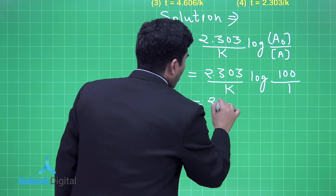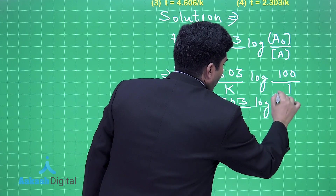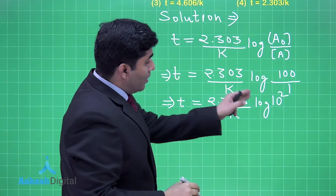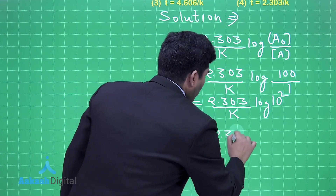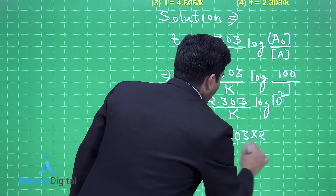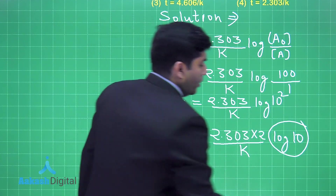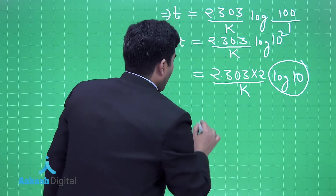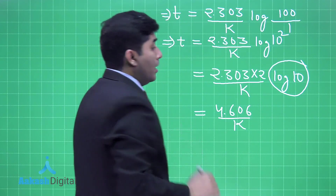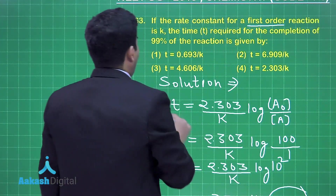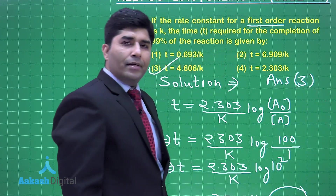So T = 2.303/K × log(100/1) = 2.303/K × log(10²). Bringing down the exponent: T = (2 × 2.303)/K × log(10). Since log(10) = 1, the final answer is T = 4.606/K. This matches option number 3, so the answer is option number 3.